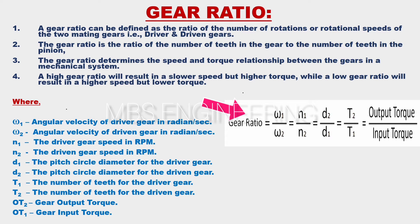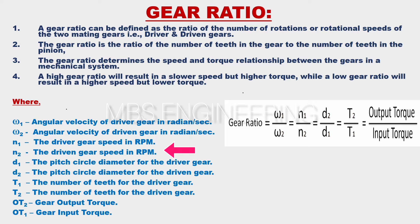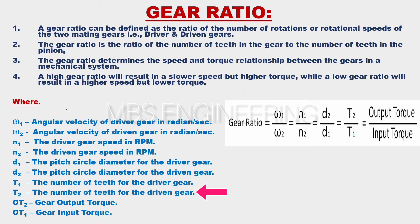Please refer to the gear ratio formula for better understanding. Where: Omega 1 is the angular velocity of the driver gear in radians per second; Omega 2 is the angular velocity of the driven gear in radians per second; N1 is the driver gear speed in RPM; N2 is the driven gear speed in RPM; D1 is the pitch circle diameter for the driver gear; D2 is the pitch circle diameter for the driven gear; T1 is the number of teeth for the driver gear; T2 is the number of teeth for the driven gear; OT2 is the gear output torque; OT1 is the gear input torque.